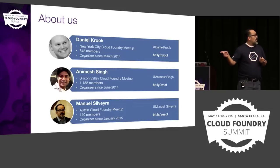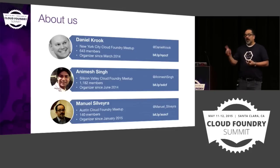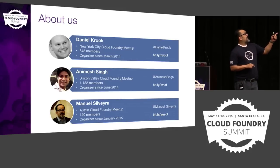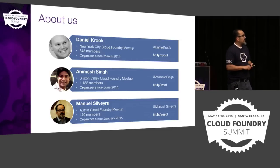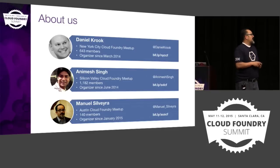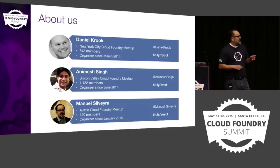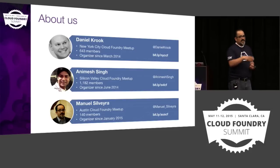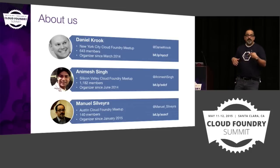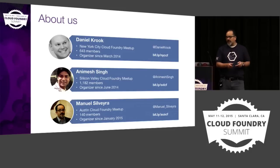A little bit about us: Dan runs the New York City Cloud Foundry meetup and also the PHP and OpenStack meetups in New York City. The Cloud Foundry meetup has 643 members and he's been an organizer since March of last year. Animesh runs one of the biggest Cloud Foundry meetups with about 1,200 members, organizing since June 2014. Dave Nielsen started it before that. I've been running the Austin Cloud Foundry meetup since January. Our team also runs the Boston, RTP, and China meetups.